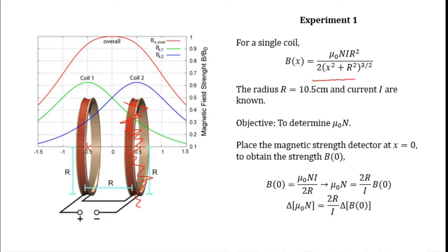The error of μ₀N can also be calculated via the propagation of error formula. Finally, you should quote the value of μ₀N plus minus the error of μ₀N.